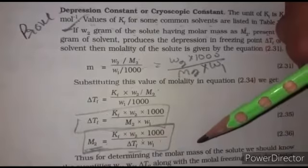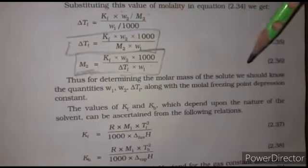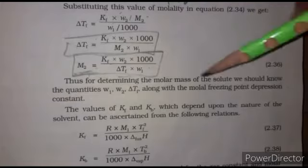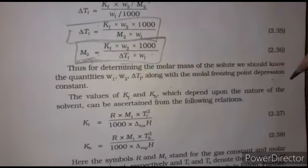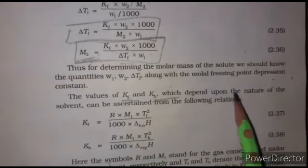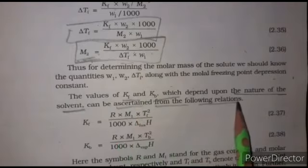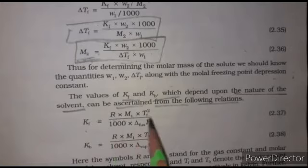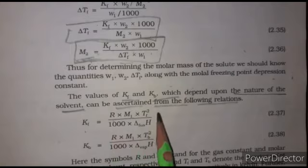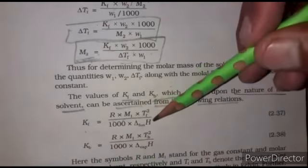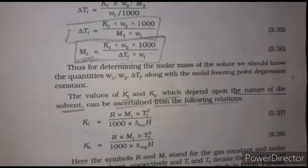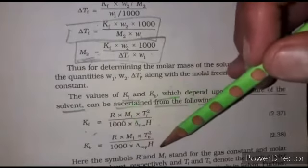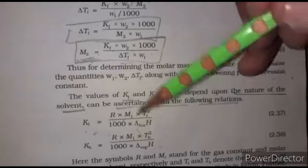Thus we can determine the molar mass of the solute by knowing the quantities w₁, w₂, delta Tf, and Kf at a particular temperature. The values of Kf and Kb depend upon the nature of the solvent and can be calculated from the relation: Kf = (R × M₁ × Tf²) / (1000 × ΔHfusion), where R is the gas constant, M₁ is the molar mass of the solvent, Tf is the freezing temperature of the solvent, and ΔHfusion is the enthalpy of fusion.